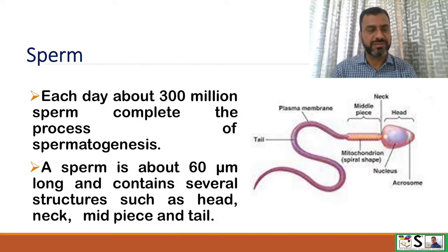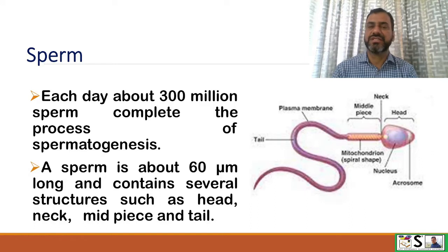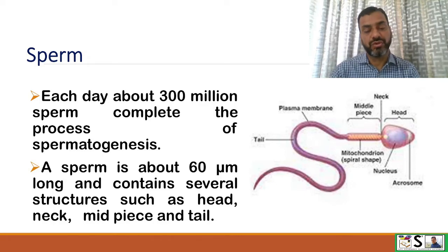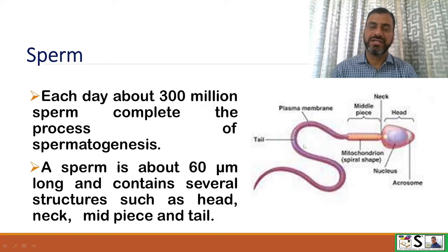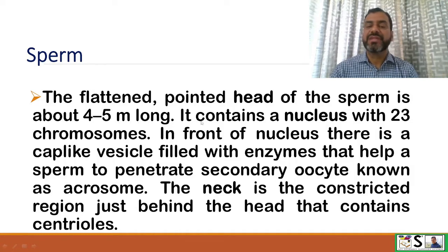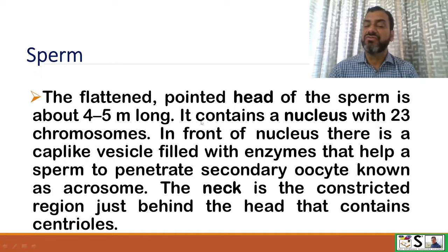Now we come to the sperm. Sperm are special cells which take part in fertilization and come from the testes. Each day approximately 300 million sperm complete spermatogenesis. A sperm is about 60 micrometers long and contains a nucleus with 23 chromosomes. In front of the nucleus there is a cap-like vesicle called the acrosome, which is about 4 to 5 micrometers long and is filled with enzymes that help the sperm penetrate the secondary oocyte.